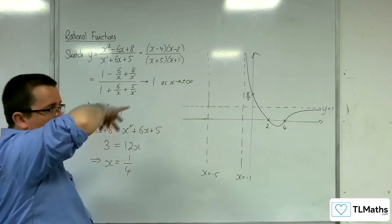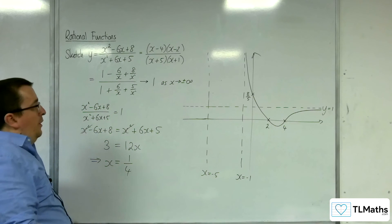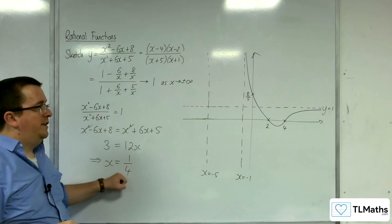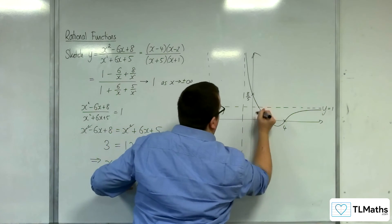It can't go over the horizontal asymptote and then come back on itself, because we know it can't cross the horizontal asymptote again, because there's only one point of intersection, that point there at 1 quarter.